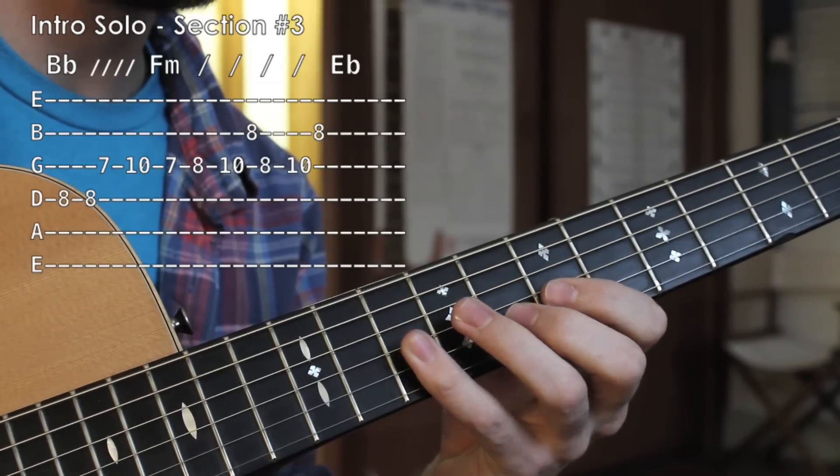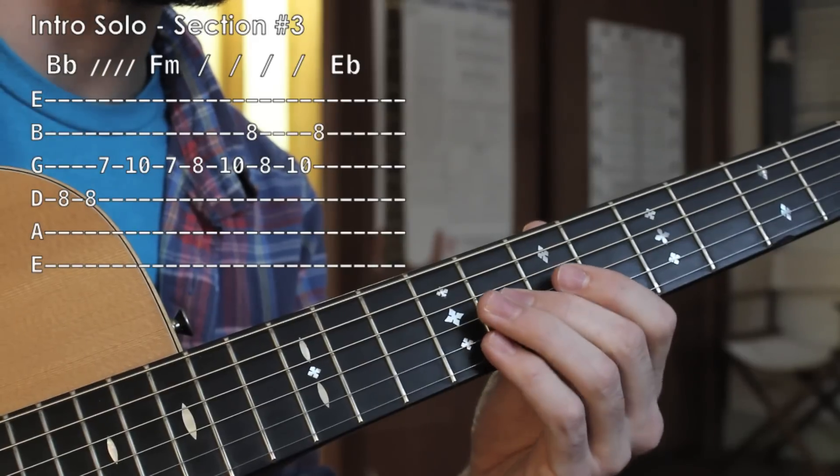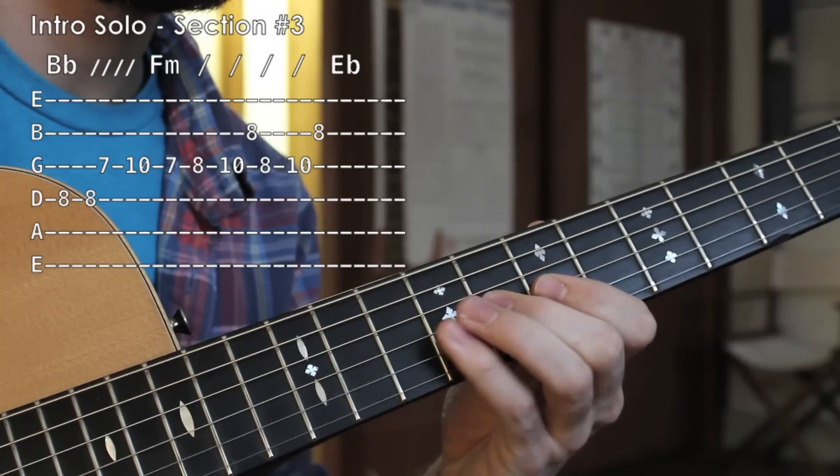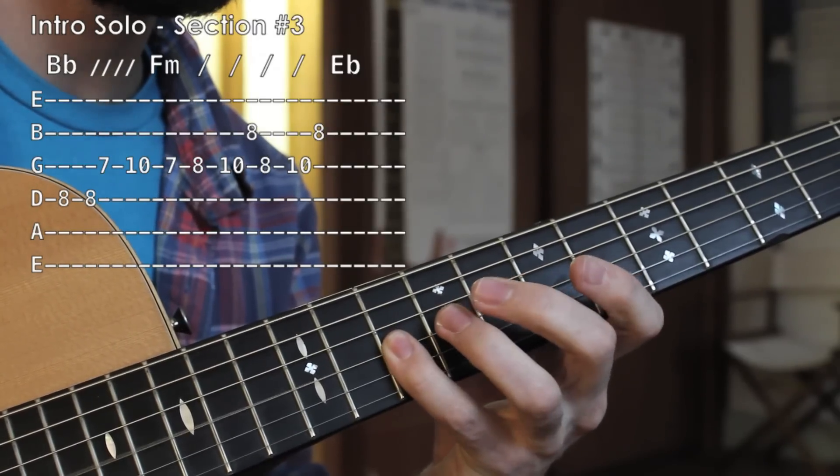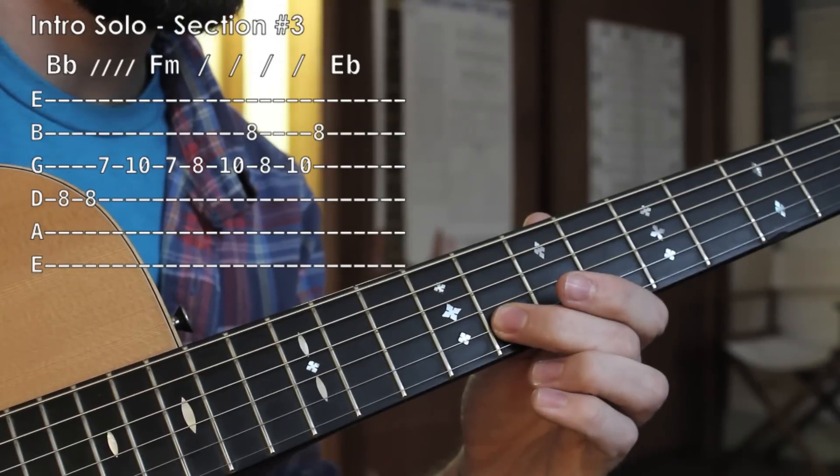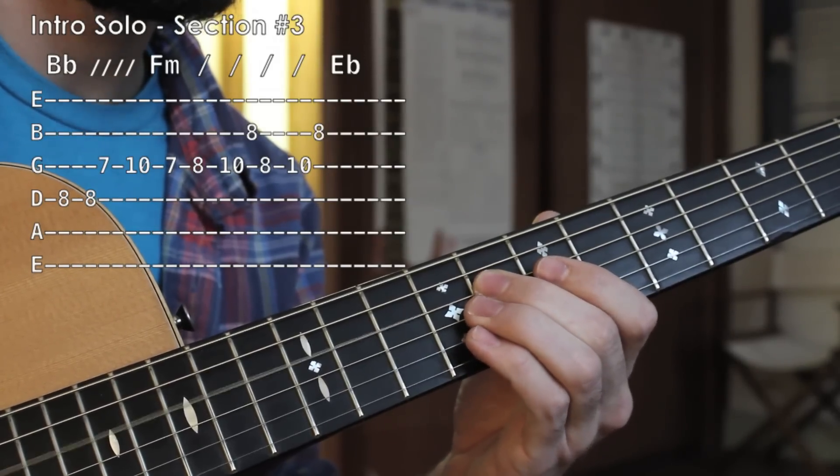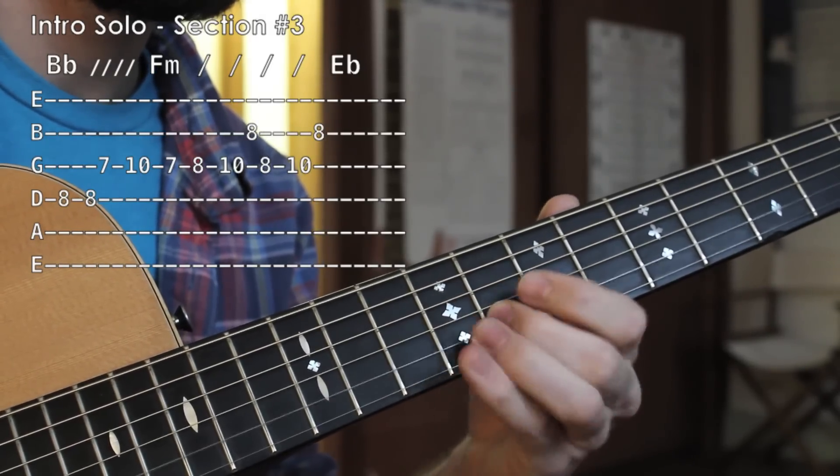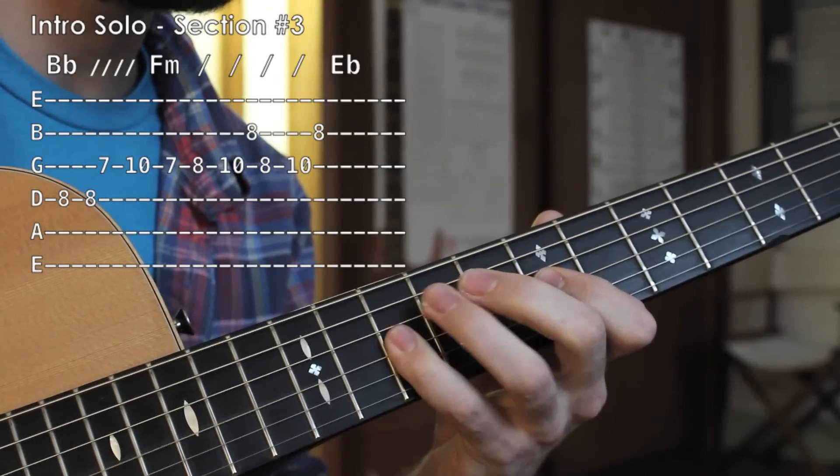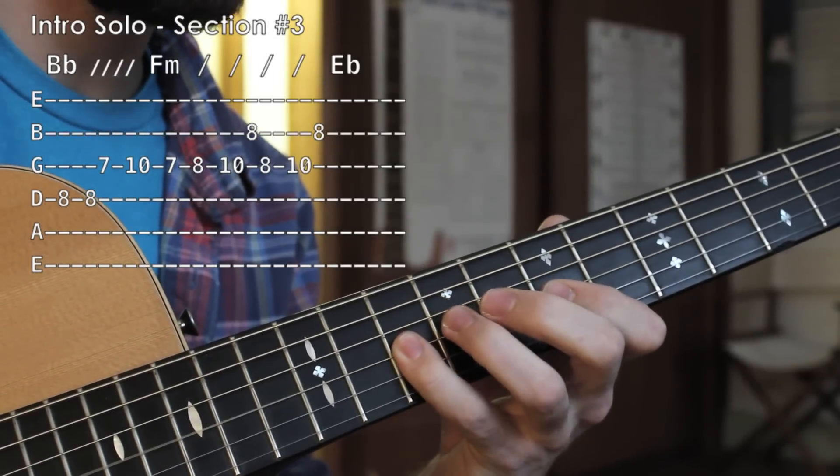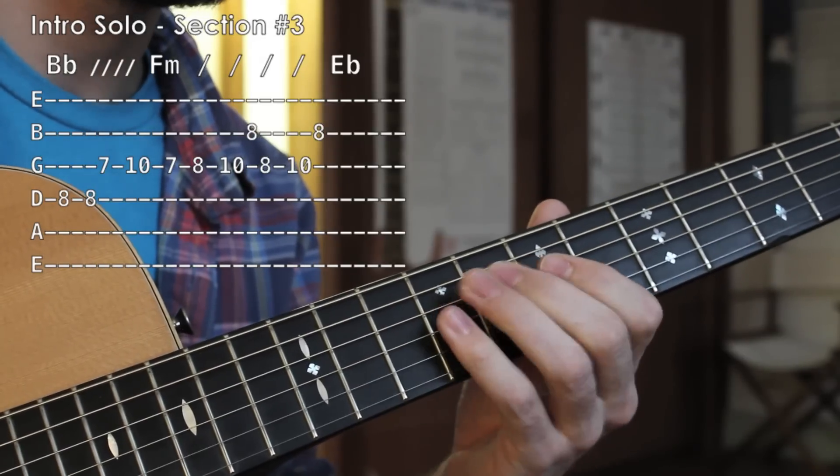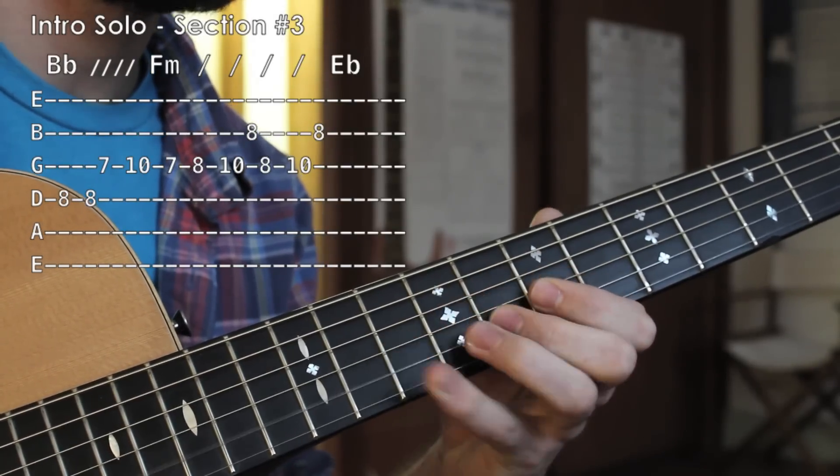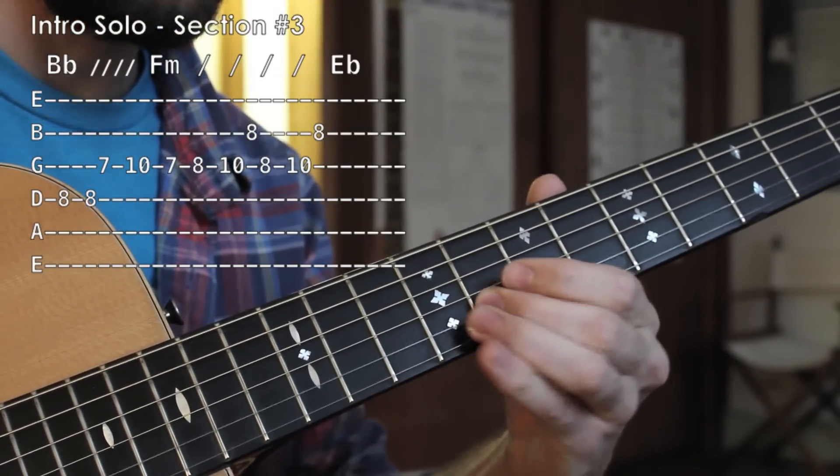That brings us to. Then I'm going to add in the eighth fret of the B string and the G string. So far. Then finally I'm just going ten on the G and eighth fret of the B. That whole thing. Eight, eight, seven, ten, seven, eight, ten, eight, eight, ten, eight. Real slow. And a little vibrato at the end.